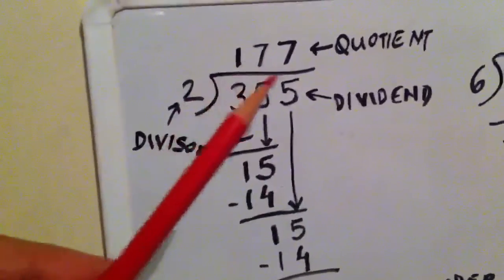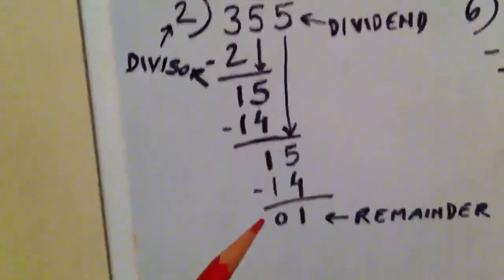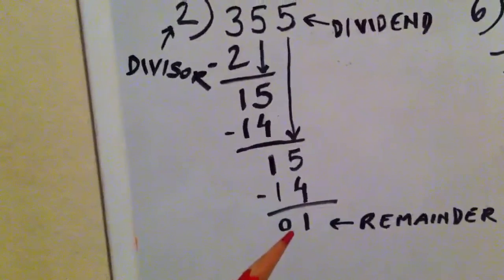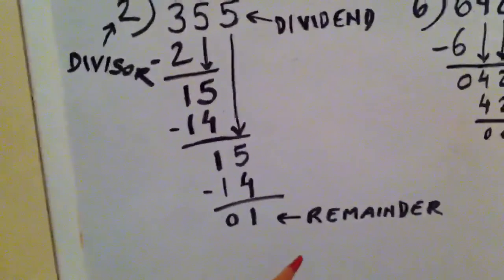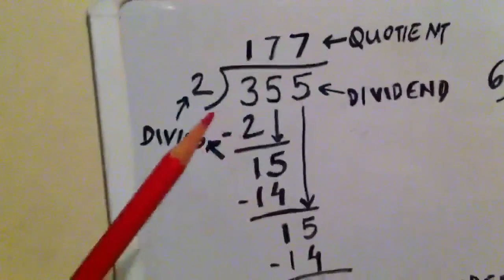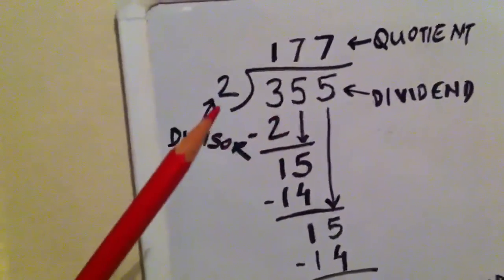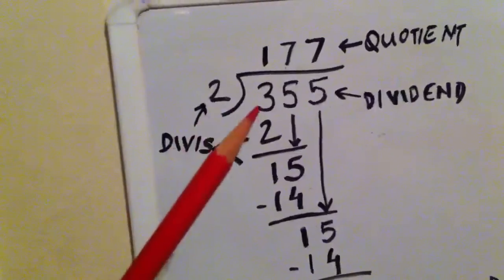The answer that we will get is called the quotient, and the number at the end which is not further divisible is called the remainder. So how do we divide? We say the 2 times table and see when do we get 3 or a number that is closest to 3.